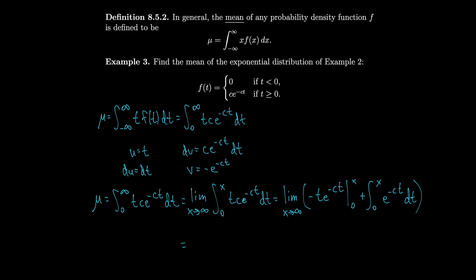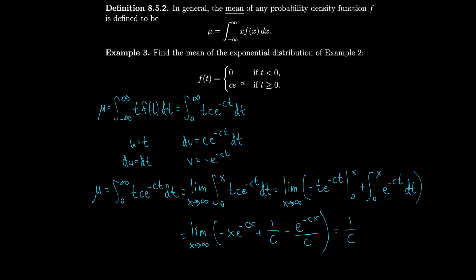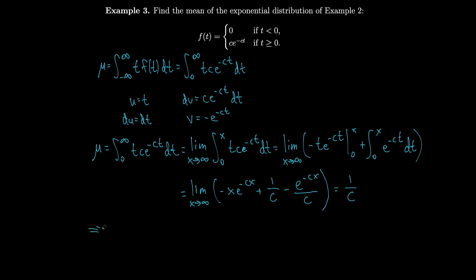Evaluating, we get the limit of minus x·e^(−cx) plus (1/c) minus e^(−cx)/c. The term minus x·e^(−cx) goes to 0, and e^(−cx)/c goes to 0, so we're left with 1/c. Therefore the mean mu equals 1/c, which means c equals 1/mu.